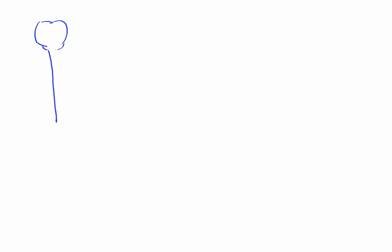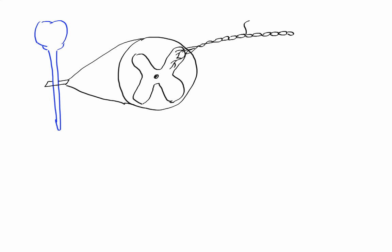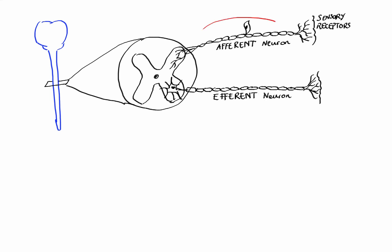Now if we look at the cross section of the spinal cord, we would find there are three types of neurons that are of importance to us. Number one: afferent neurons which carry signals to the CNS from sensory receptors in peripheral tissues. Number two: efferent neurons that carry signals from the CNS to the effector organs such as muscle. And number three: interneurons which are located between afferent and efferent neurons and integrate information that flows between the two.